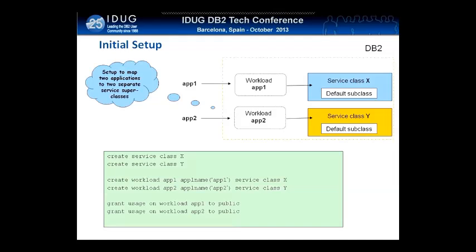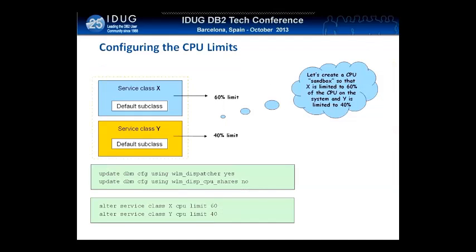Once we're set up like this, we're ready to set up our CPU limits. To do this, we've got to make sure the new WLM dispatcher is turned on. We set WLM dispatcher to yes in your DBM config and we set your dispatcher CPU shares off because we're dealing with limits here. Then all you have to do is alter your service classes and set the desired CPU limit. In this case we have set a limit of 60% on service class X and a limit of 40% on service class Y.